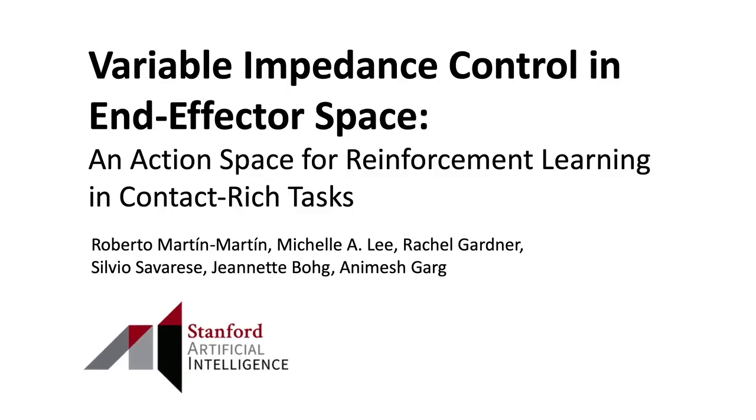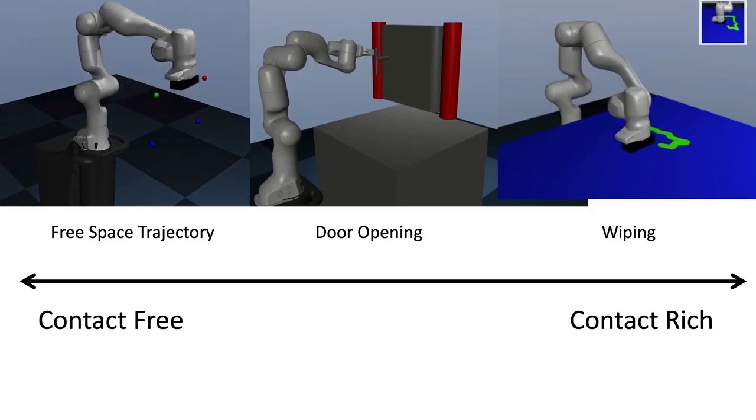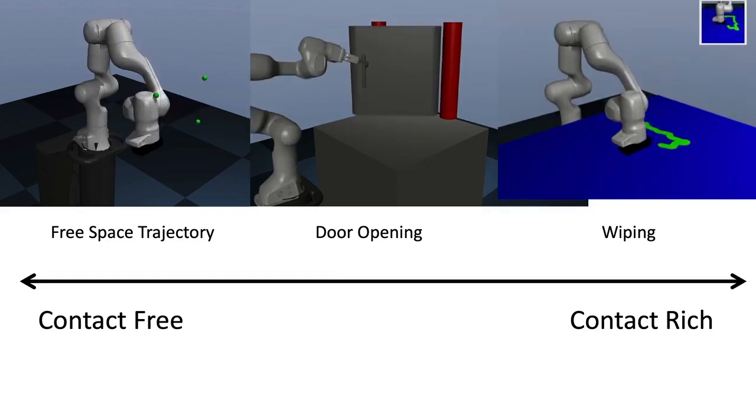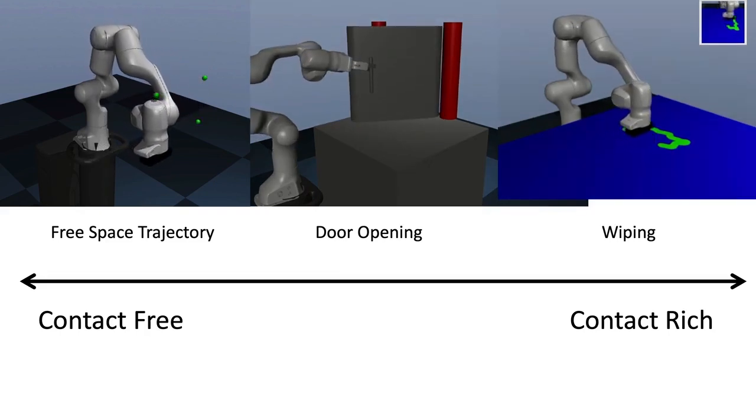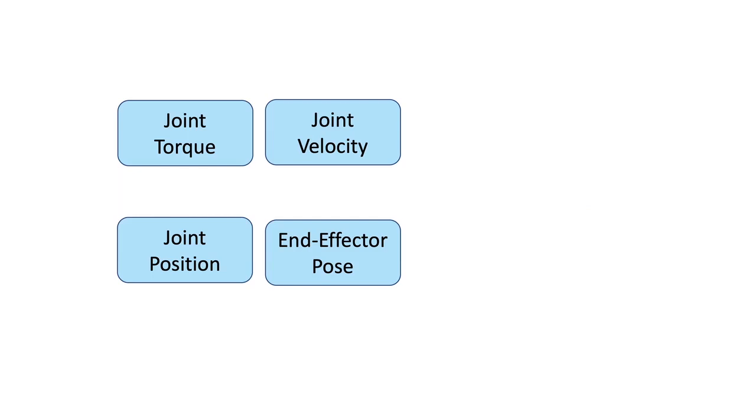In our work, we asked the question: for tasks with different levels of contact, what are the best action spaces to learn a policy with reinforcement learning? We present a study of four action spaces for RL: joint torque, joint velocity, joint position, and end effector pose.